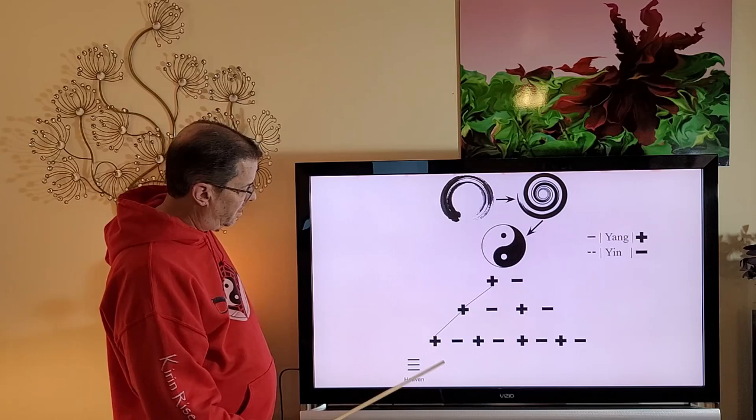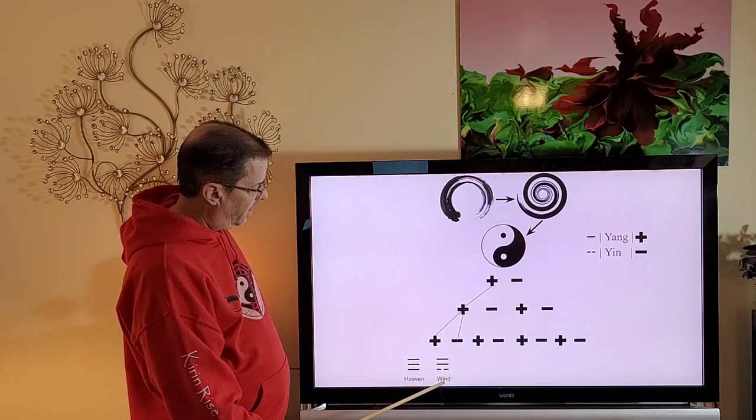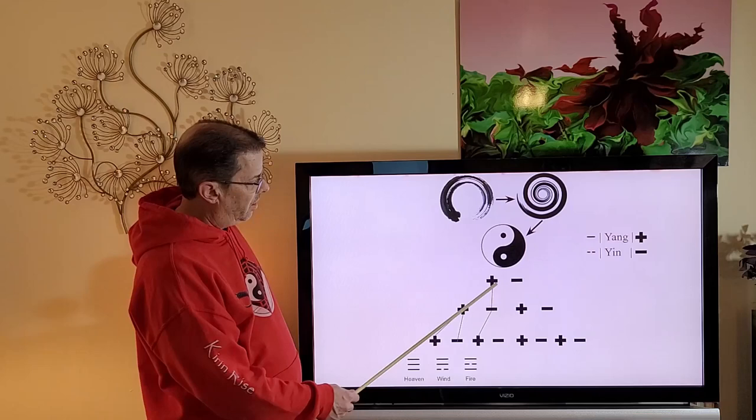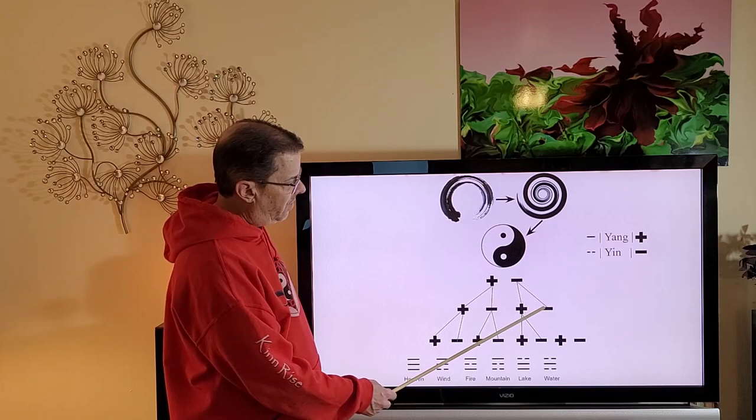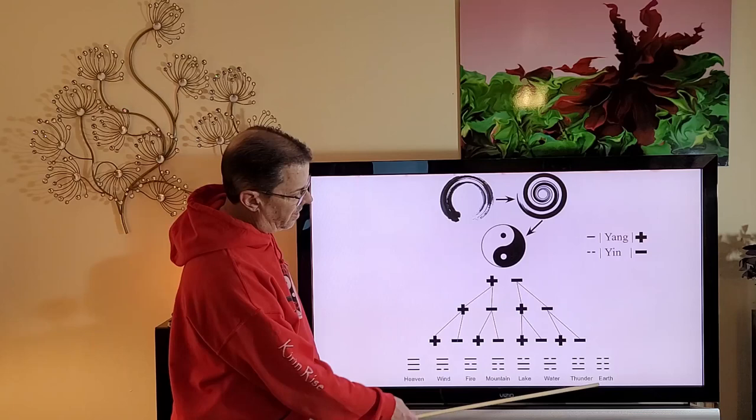So positive, positive, positive gives us the trigram for heaven. Positive, positive, negative is the trigram for wind. Positive, negative, positive is fire. Positive, negative, negative is mountain. Negative, positive, positive is lake. Negative, positive, negative is water. Negative, negative, positive is thunder. And negative, negative, negative is earth.